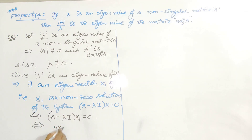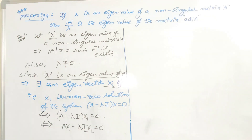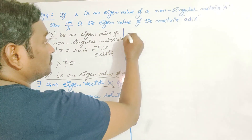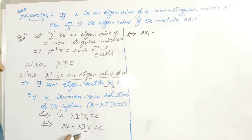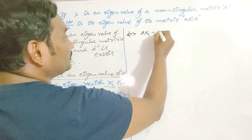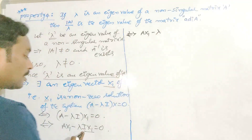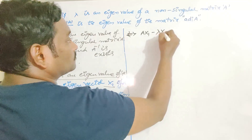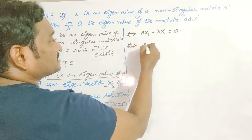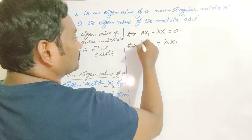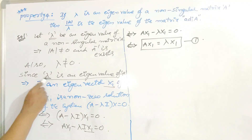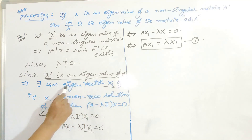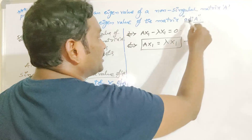Writing this out: A·x1 minus lambda·I·x1 equals zero. Since I·x1 is just x1 by the identity property of matrices, we get A·x1 is equal to lambda·x1. This is the key result. So by taking eigenvalue lambda of matrix A with respect to eigenvector x1, we get this equation. Since we need the eigenvalue for the adjoint of A, I will pre-multiply this equation by adjoint A.